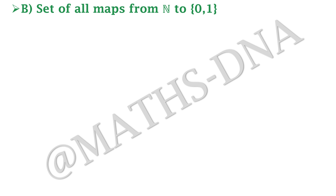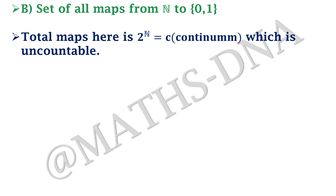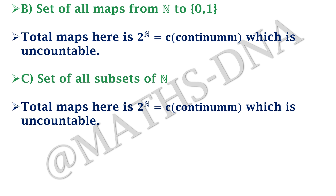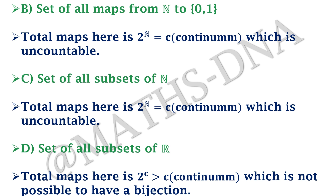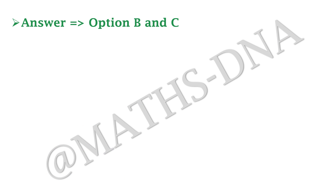Option B — maps from N to {0,1} — has cardinality 2^N = continuum, which is uncountable, so B is correct. Option C — all subsets of N, i.e., the power set — also has cardinality 2^N = continuum, so C is correct. Option D — all subsets of R — has cardinality 2^c = 2^continuum, which is strictly greater than continuum, so a bijection with R is impossible. The correct answers are Options B and C.